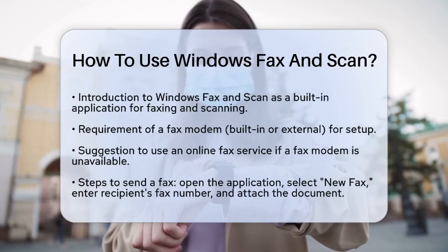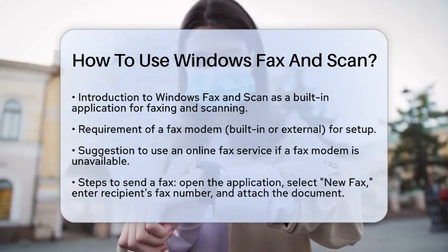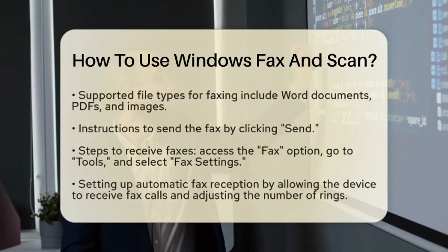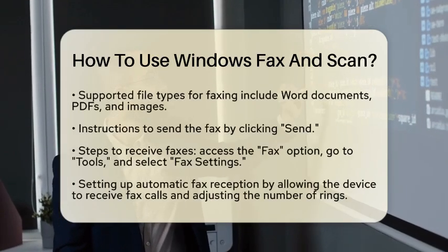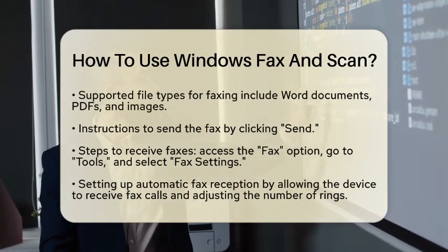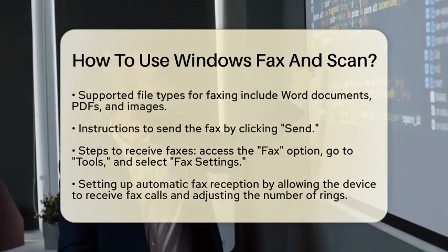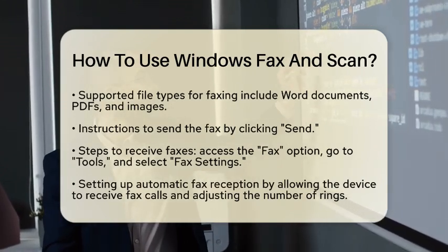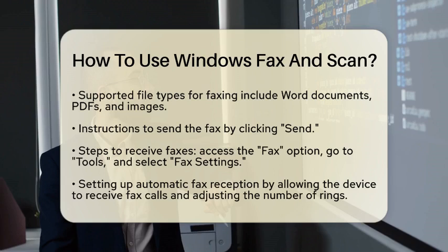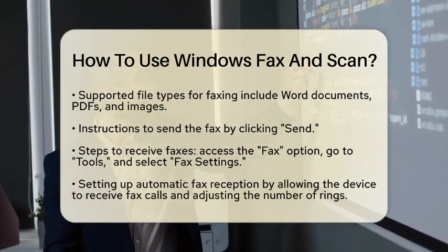To send a fax, start by opening Windows Fax and Scan from your Start menu. Once it is open, look for the New Fax option at the top toolbar and click on it. You will need to enter the recipient's fax number along with any other necessary details. Next, attach the document you wish to fax. Windows Fax and Scan supports various file types, including Word documents, PDF files, and images. When you are ready, just click Send to transmit your fax.